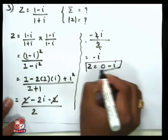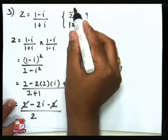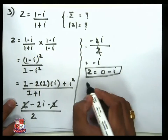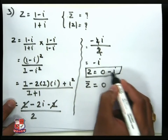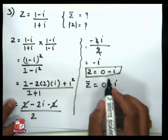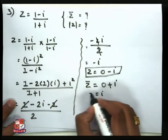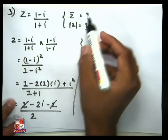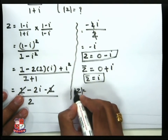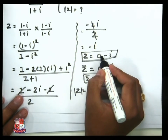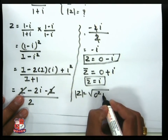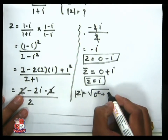So z̄ = i. We also want to find |z|. The modulus formula is |z| = √(a² + b²), where a is the real part and b is the coefficient of i. Here a = 0 and b = −1 (coefficient of i), so |z| = √(0² + 1²) = √1 = 1.